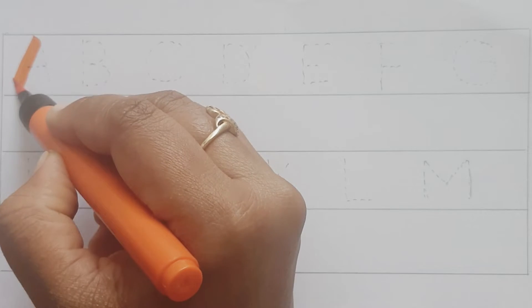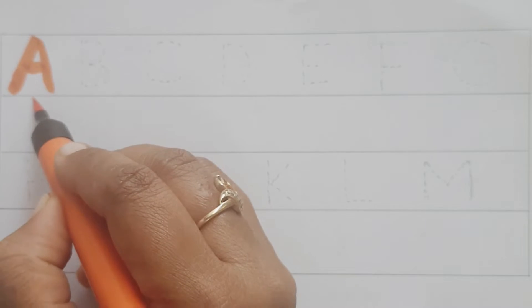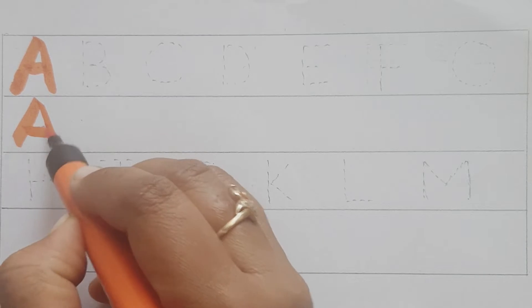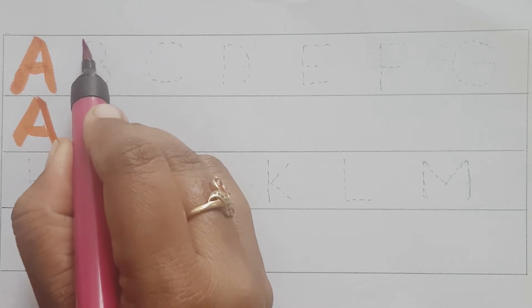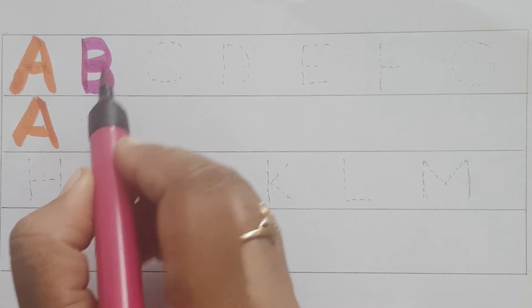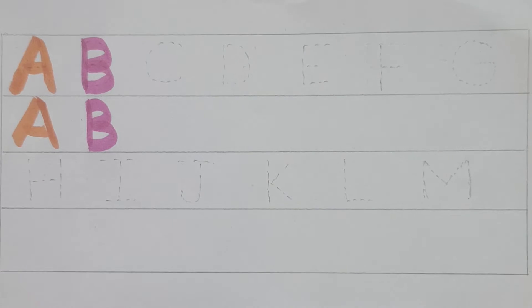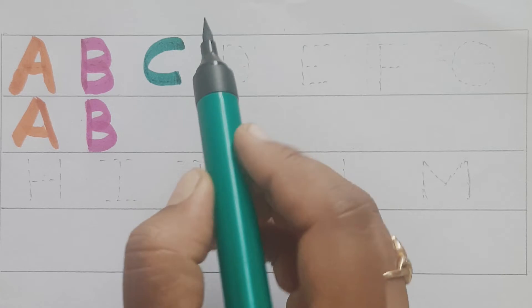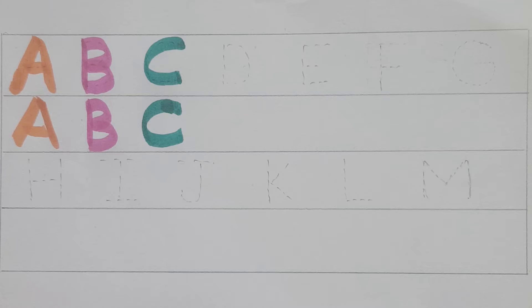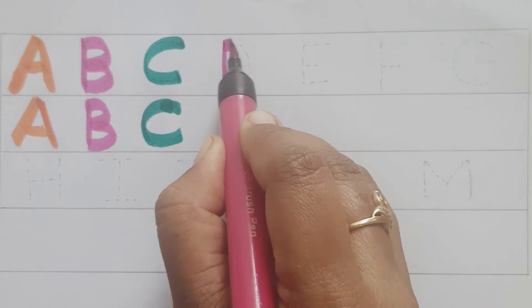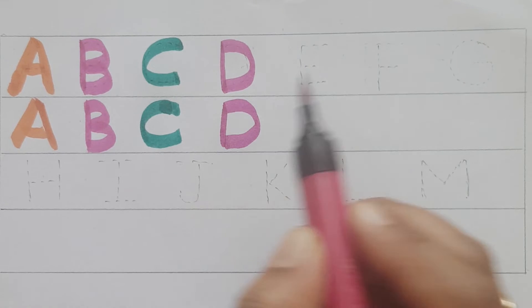A. A for Ant. A. A for Apple. A. B. B for Ball. B. B for Bat. B. C. C for Cat. C for Car. C. D. D for Dog. D for Drum. D.